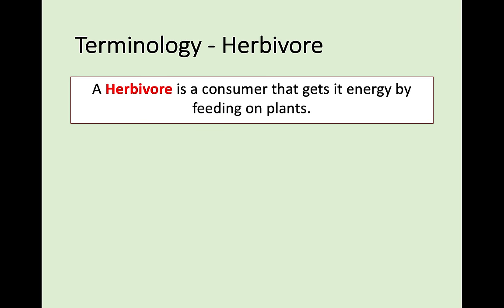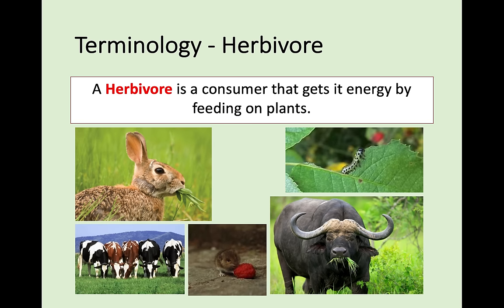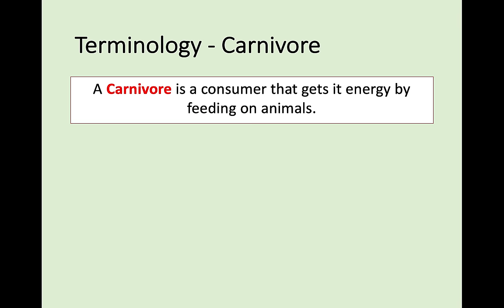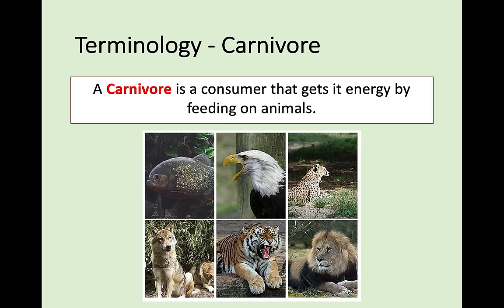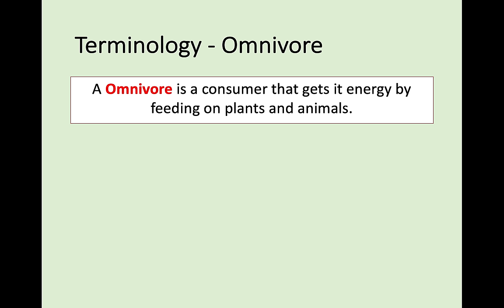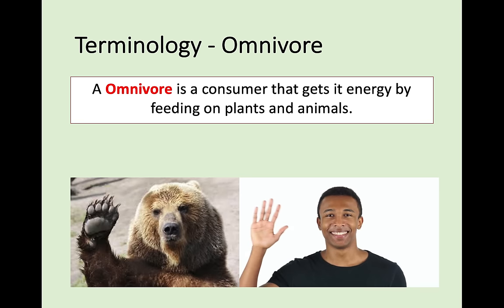A herbivore is a consumer that gets its energy by feeding exclusively on plants. A carnivore is a consumer that gets its energy by feeding on other animals — there will be another animal beneath them in the food chain that they eat. An omnivore is a consumer that gets its energy by feeding on both plants and animals. Examples of omnivores include bears and humans, as we can eat both and have the digestive capacity to function on that diet.